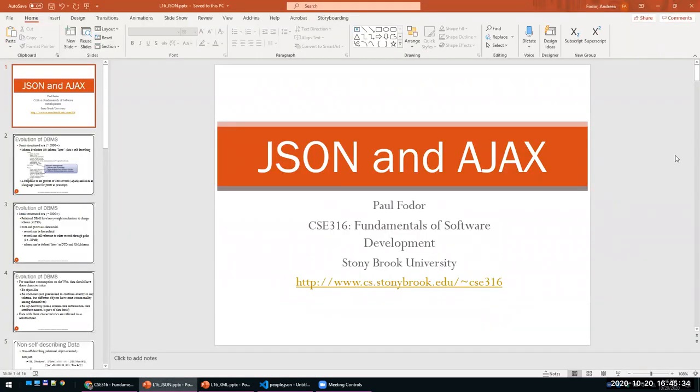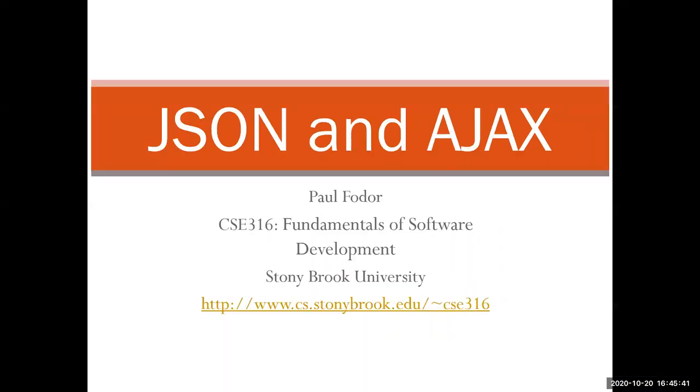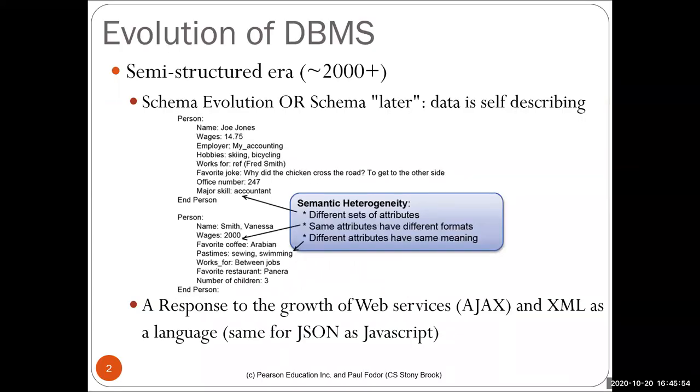Until now we talked about relational databases. JSON, and actually before JSON, XML, was a different direction towards non-structured databases and what is known today as NoSQL or not only SQL. Around 2000-ish, a new era in databases started called the semi-structured era. This is something we covered before when we talked about history of database management systems.